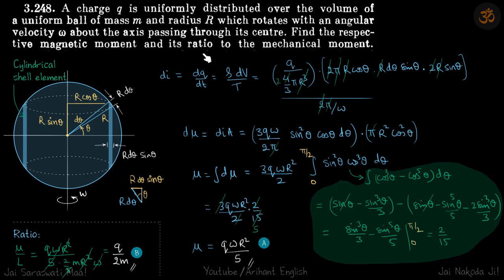Now we are supposed to find the ratio of this magnetic moment to mechanical moment. So mechanical moment of a solid sphere is I omega which is 2 by 5 m r square into omega. So mu divided by L which is q by 2m which is our standard result. So here in this question important thing is just how the element we are taking. So we are taking a cylindrical shell element.